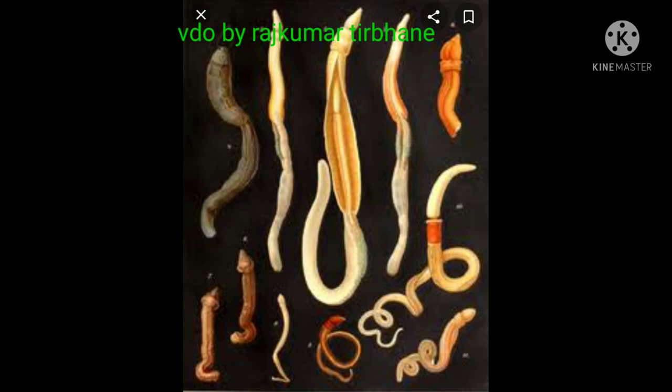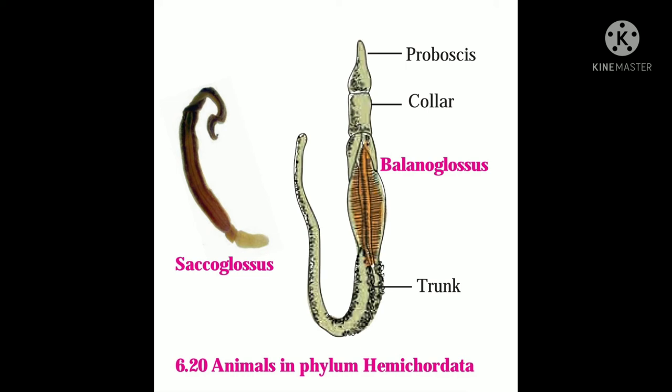They are unisexual, or some may be hermaphrodite. For example, Balanoglossus and Sacoglossus. Through the viewpoint of evolution, Balanoglossus is considered a connecting link between non-chordate and chordate animals. These animals show the characters of both groups — chordates and non-chordates.